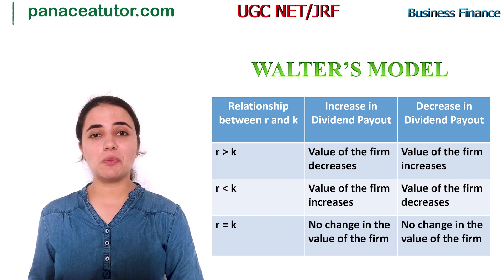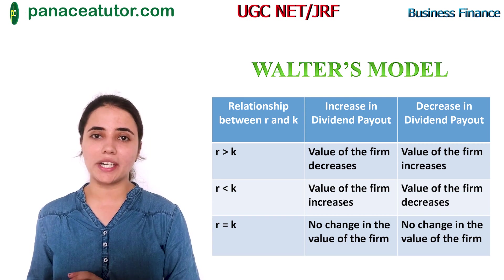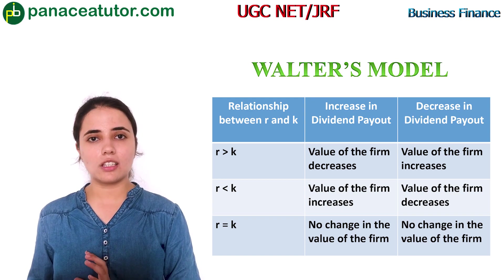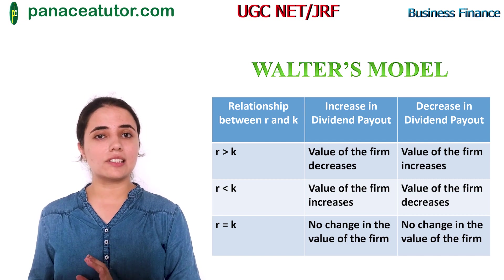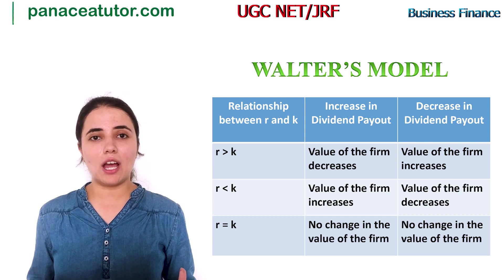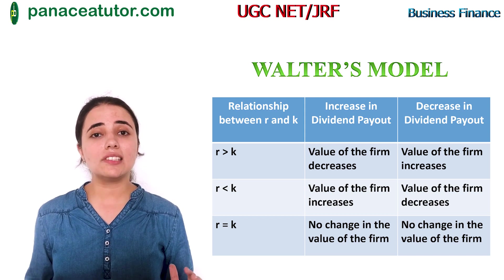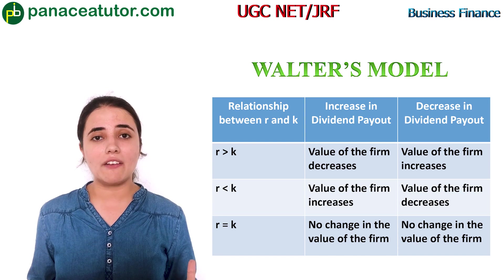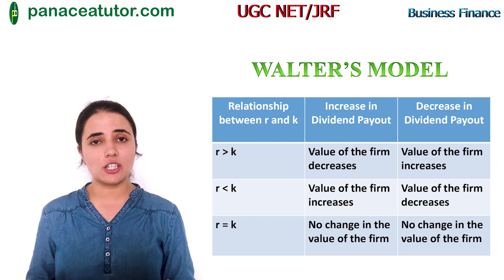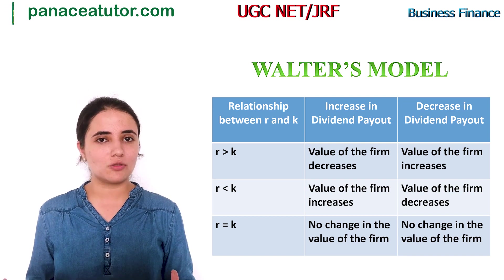Moving towards the Walter model. According to Professor Walter, this model is based upon the relationship between the rate of return (R) and the firm's cost of capital (K). Professor Walter has divided firms into three categories: normal firms, declining firms, and growth firms. In case of growth firms, R is greater than K; in declining firms, R is less than K; and in normal firms, R is equal to K. As you can see on your screen, the dividend payout ratio for each firm type is given. For growth firms, the dividend payout ratio is 0% — because growth firms have many profitable opportunities, so it is advisable they invest their earnings in those opportunities to increase the value of the firm and the market price of the shares.